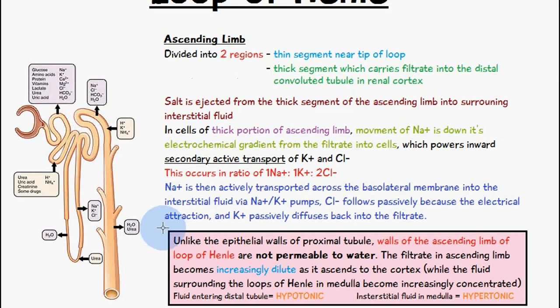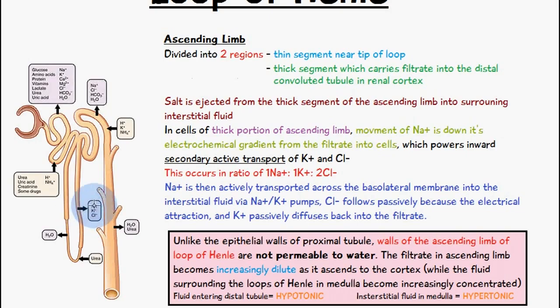Salt is initially going to be ejected from this thick segment of the ascending limb into the surrounding interstitial fluid. In the cells of the thick portion of the ascending limb, we have the movement of sodium ions down their electrochemical gradient from the filtrate into the cells. Sodium ions move from the more positively charged filtrate into the cells of the ascending limb, which are less positive in comparison.